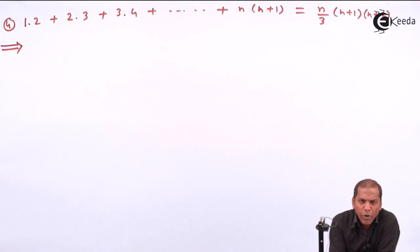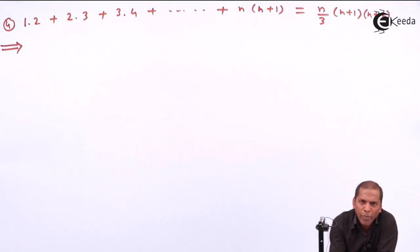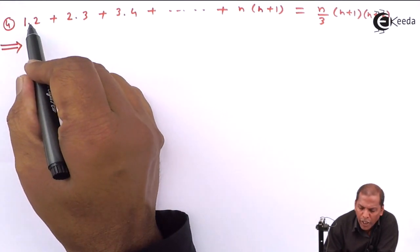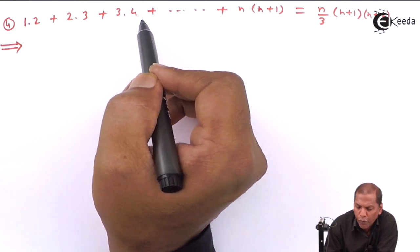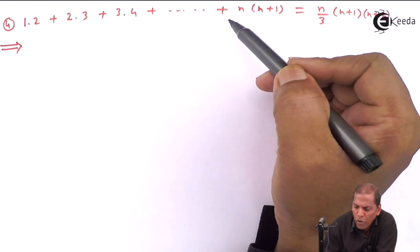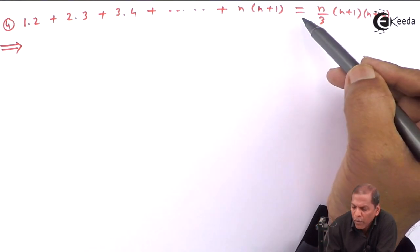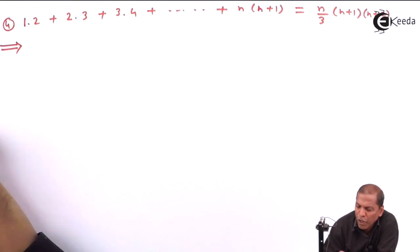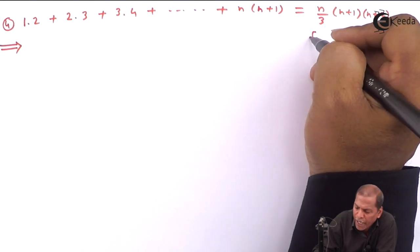Hello friends. Now we see problem number 4, which is also based on the principle of mathematical induction from the chapter on method of induction and binomial theorem. The problem is: 1·2 + 2·3 + 3·4 + ... + n(n+1) = n/3 · (n+1) · (n+2), for all n belonging to the set of natural numbers.